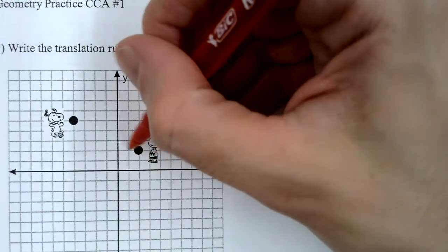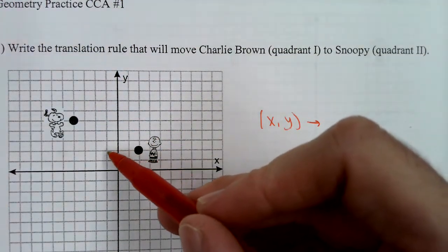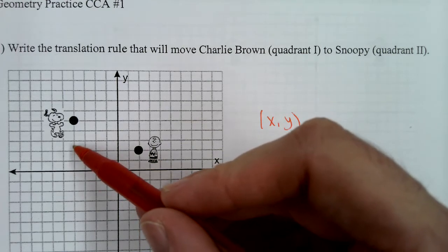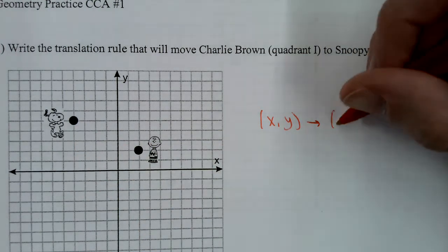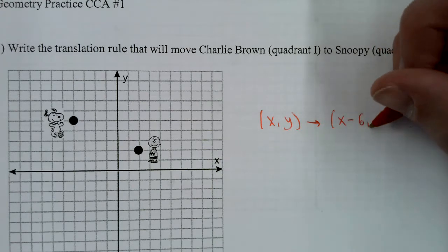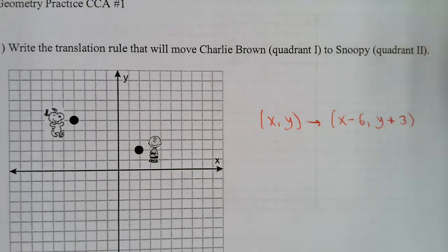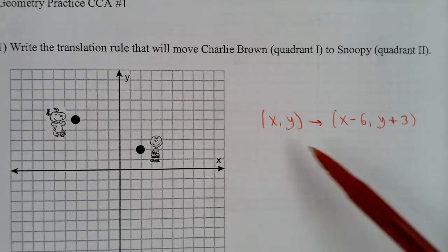If you count, you're going left one, two, three, four, five, six, and you're going up one, two, three. So the way you write that is: XY maps onto X minus six, Y plus three. That's how you write the answer. Anything other than exactly what I just wrote is not correct — it has to be written exactly like that.